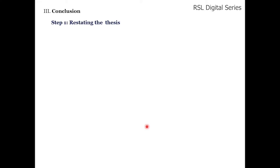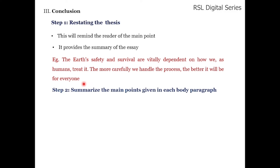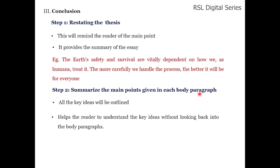In step one, you have to restate the thesis so the reader is reminded of the main point, and it provides a summary of the essay. For example: 'The earth's safety and survival are vitally dependent on how we as humans treat it. The more carefully we handle the process, the better it will be for everyone.' In step two, summarize the main points given in each body paragraph. All the key ideas should be outlined so the reader can understand them without looking back.